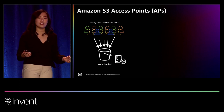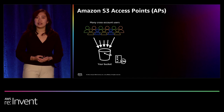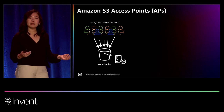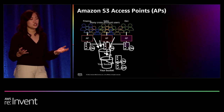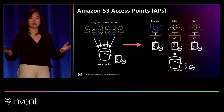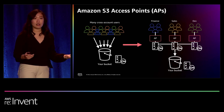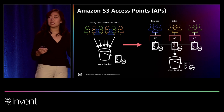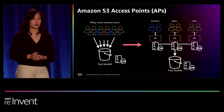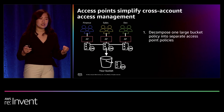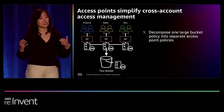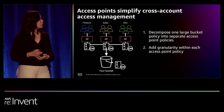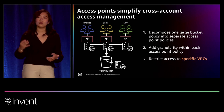As your bucket evolves into a central location for shared data sets, your bucket policy can become more complex. Amazon S3 access points is a feature that helps simplify access management for shared data sets. You divide access to your bucket into multiple access points for different groups of users — for example, finance, sales, and dev. Each group reads data from a designated access point with its own access point policy. With S3 access points, you effectively decompose your bucket policy into separate access point policies that are more easily managed. Within each access point policy, you can add further granularity, and you can use access points to restrict access to specific virtual private clouds.